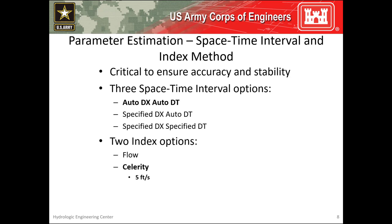A space-time interval and index method are required for each routing reach. These parameters are critical to ensure accuracy and stability of the method. For most applications, the AutoDX, AutoDT method is adequate. Also for most applications, using the celerity index method and a celerity of 5 feet per second is adequate, but that can vary based upon the use case.